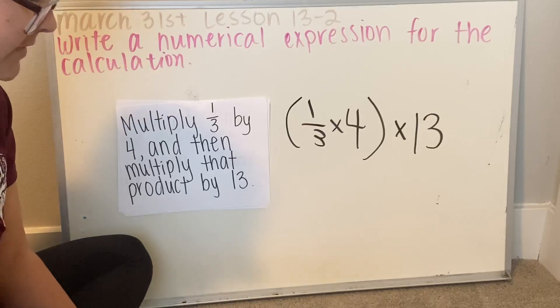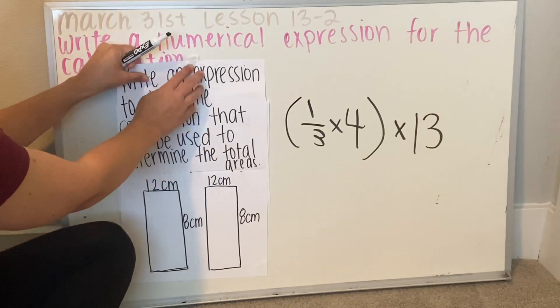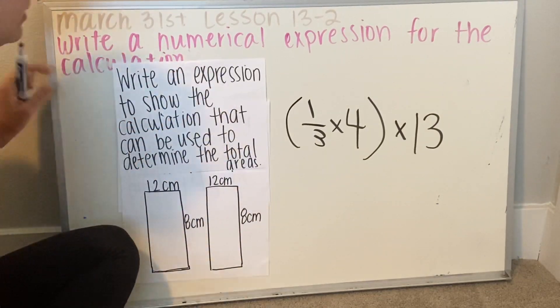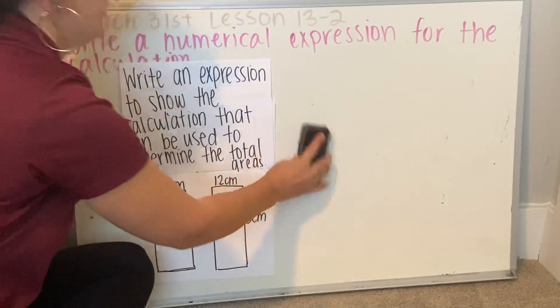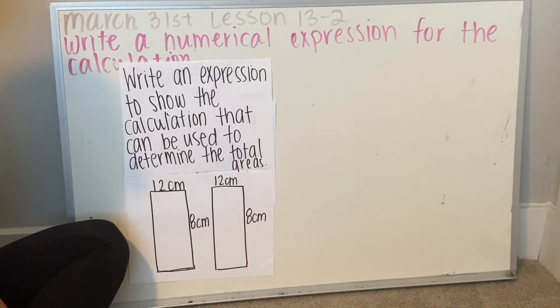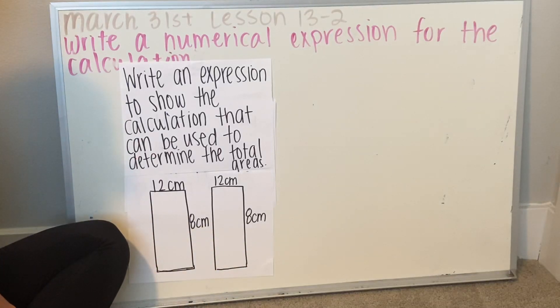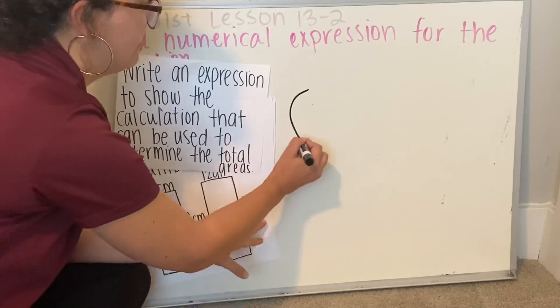This one's a little different. This one says write an expression to show the calculation that can be used to determine the total areas. So here I have two rectangles with the width of 12 and the length of 8 for each of them. To find the area of a rectangle, you need to multiply the length times width.